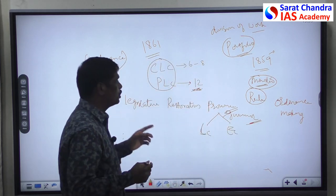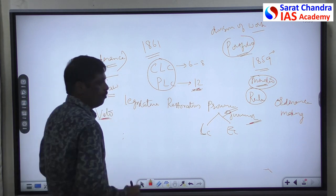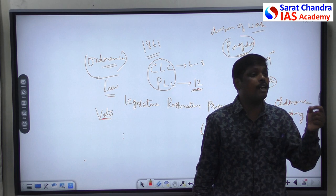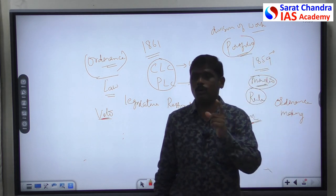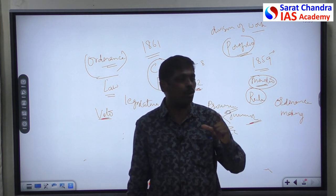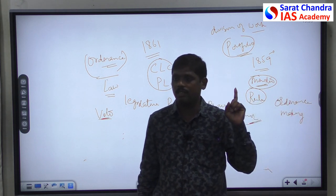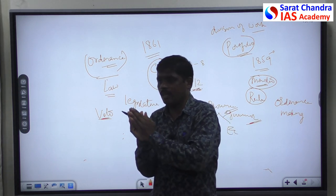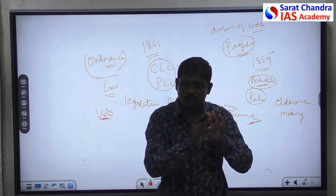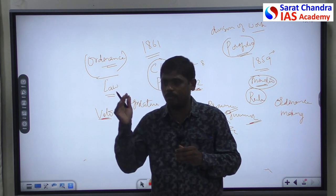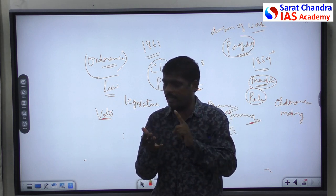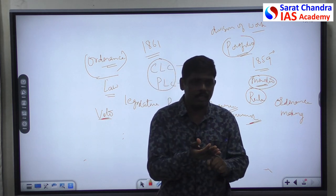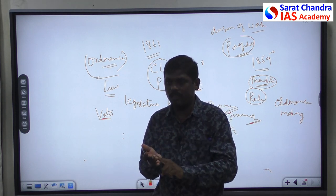Veto powers were also given to the Viceroy. Veto means overriding powers — the power to reject. The Viceroy had every power to reject or override a law made by the legislature. It was not compulsory for the Viceroy to accept the laws of the legislature; he had every power to reject them outright. So he had: the power to allocate business of government (portfolio system), the power to make rules, the power to make budget, the power to issue ordinances, and the power to veto.